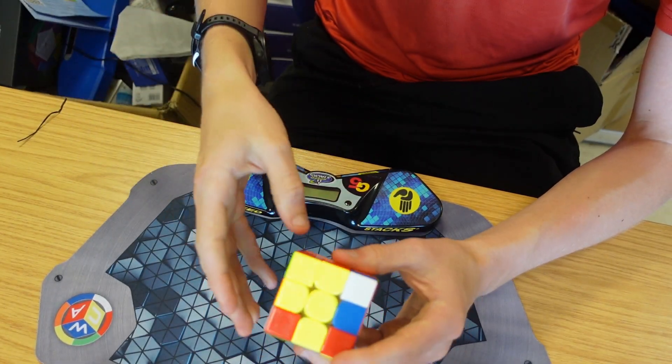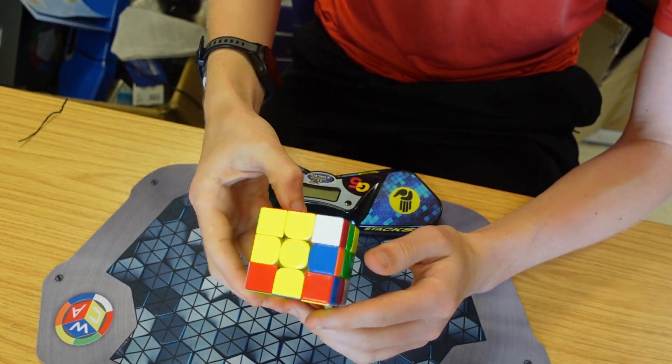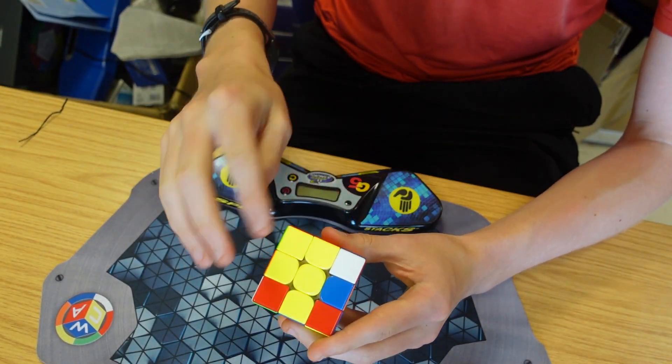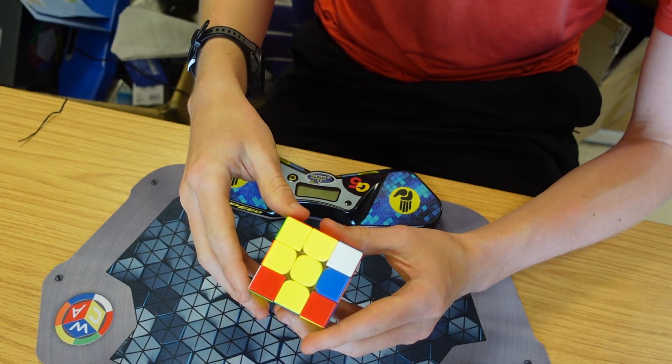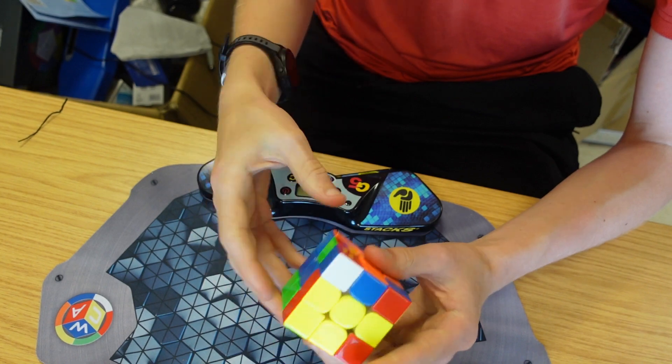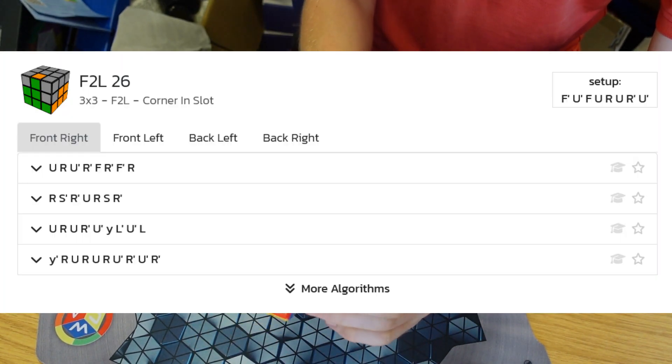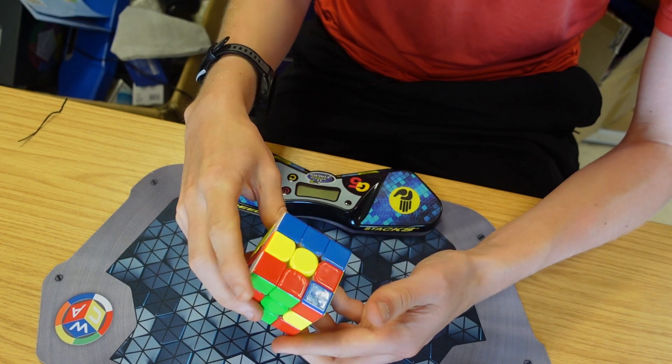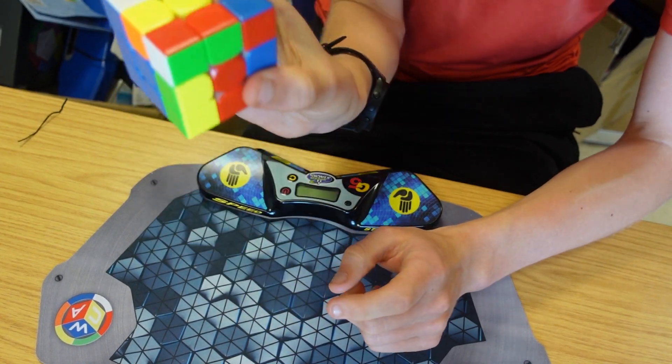Instead of solving the first layer and then the second layer, we're going to do what's called F2L. F2L is a method where we solve the first two layers at the same time. We're going to first insert this normally because the first layer corner is already in place.